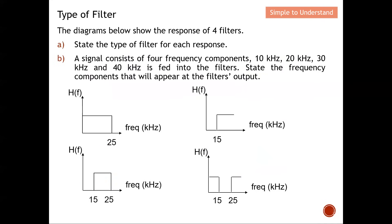Let me work through an example to understand these four filter types. The diagram shows the response of four filters. I can identify the low pass filter because the low frequency passes; the high pass filter because the high frequency passes; the band pass filter because a specific band passes; and the band stop filter because a specific band is blocked while the rest passes. I have stated the type of each filter and explained why based on their frequency responses.